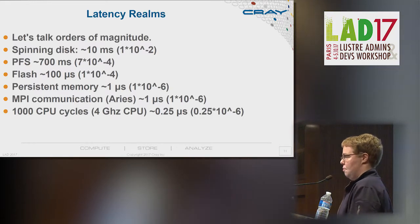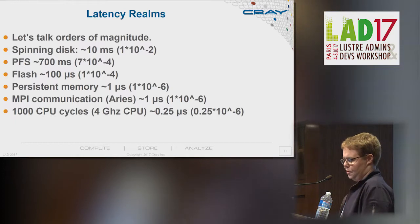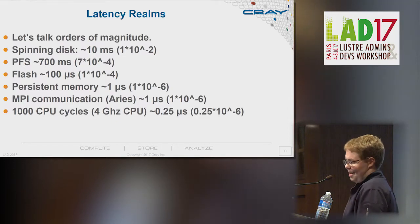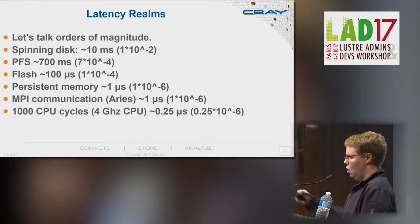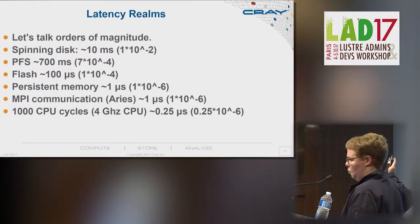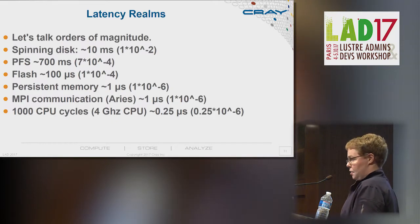For reference, a one-sided MPI communication on the Cray Aries network takes a little under a microsecond, and a thousand CPU cycles off a modern CPU is 0.25 microseconds. So we've got 10 to the fourth — that's a factor of 10,000 between spinning disk and the single microsecond of persistent memory.